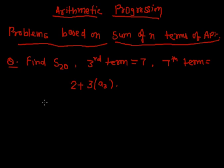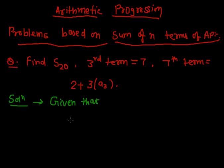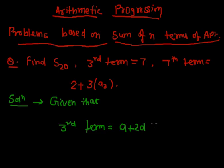Here we don't have the value of A or D directly, but we have the value of N. To solve this type of problem, first we write the expressions. The third term can be written as A plus 2D, since the Nth term is equal to A plus N minus 1 times D. So the third term equals A plus 2D and its value is given as 7.